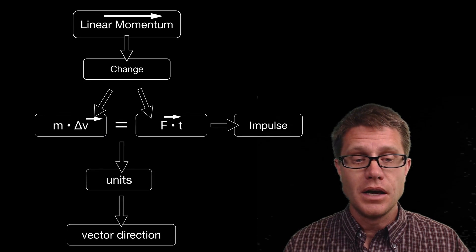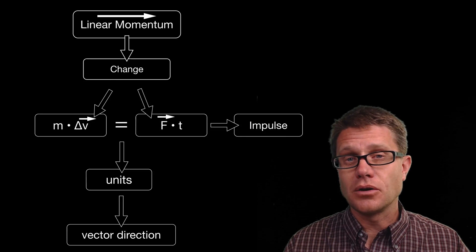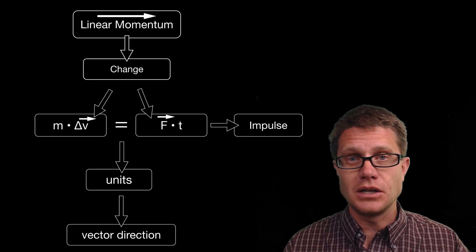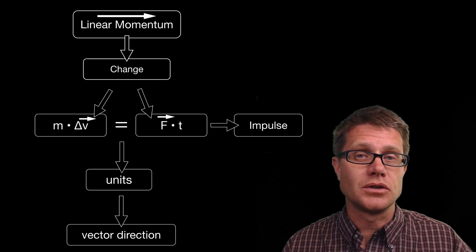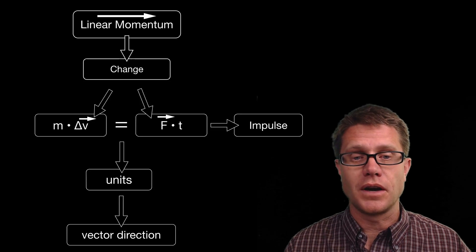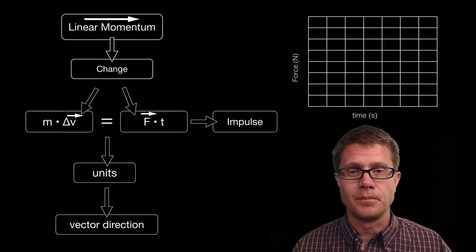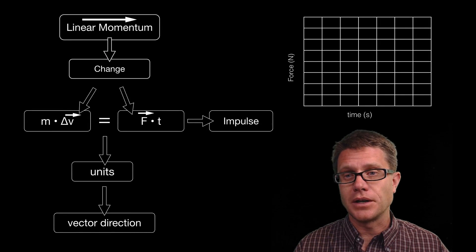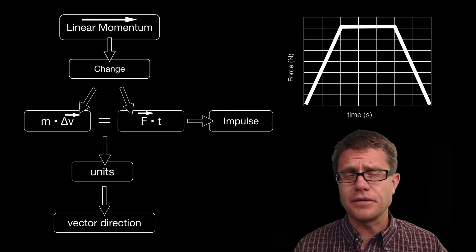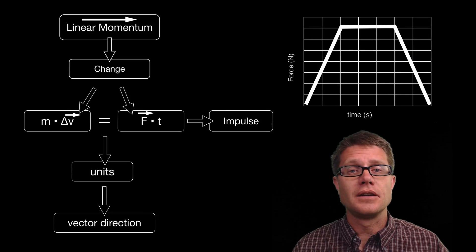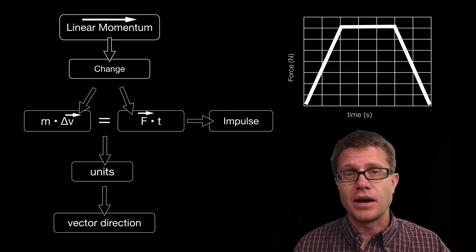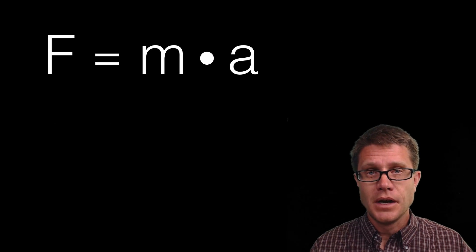Once we have one, we can figure out the other. They are also equivalent in their direction, so that change in linear momentum is equal to that force — which is a vector — times the time. If you have a force-time graph, simply graphing the force over time means the area underneath that graph gives you the change in momentum.